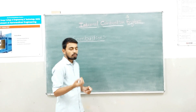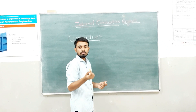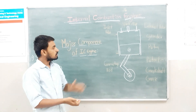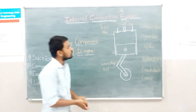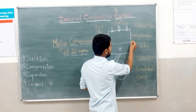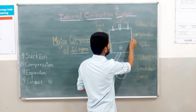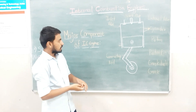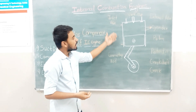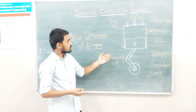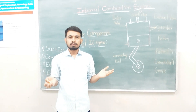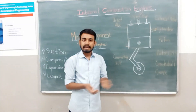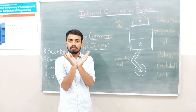Now let us see the major components of an IC engine using a simple schematic diagram. The first part is the cylinder. The cylinder is the outer body of the engine which houses the piston and other parts. An engine can have one or multiple cylinders according to its application, and the cylinder position can be horizontal, vertical, or V-shaped.